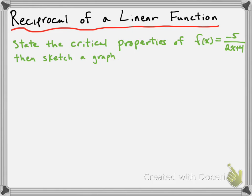The critical properties that we're going to talk about are the y-intercepts, the x-intercepts, the horizontal asymptote, and vertical asymptotes. So let's start with the y-intercept.